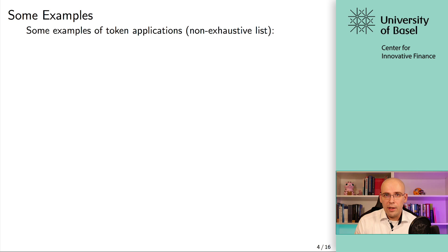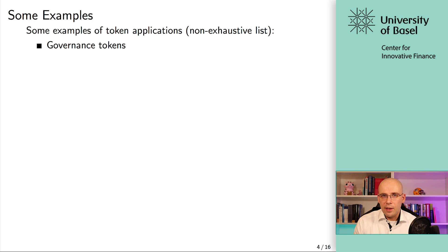One example of a token is a governance token, which is extremely important in DeFi. When you have a protocol upgrade, when things need to be changed, you need some form of a governance mechanism. In many cases, this is implemented through voting rights represented by a token. When you have one of these tokens, you can use them to vote on the future development of a protocol. There are no external dependencies in the sense that somebody promises you something off-chain — that's not the case with a governance token.